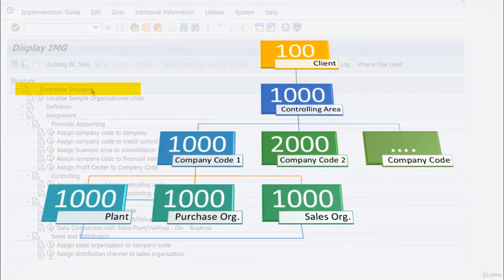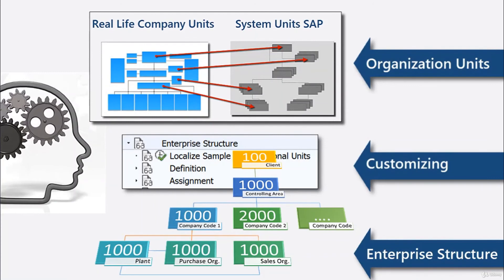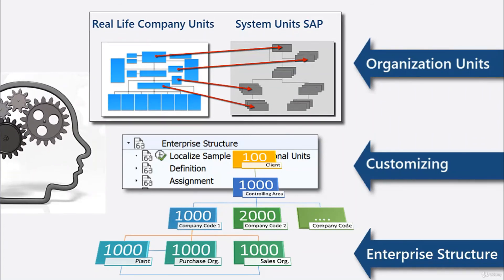Now that the company is finally established in the ERP system, we reach the end of the video. In conclusion, to establish an organizational structure of an enterprise in SAP ERP, the company's real organizational units depicted in the organizational chart must be matched with the given system organizational units. They then need to be defined and also linked to each other by executing the customizing activities in the enterprise structure of the implementation guide, with the result that the system organizational units, represented by alphanumeric keys, reflect the real enterprise structure. This framework is the foundation for processing business transactions in SAP ERP.